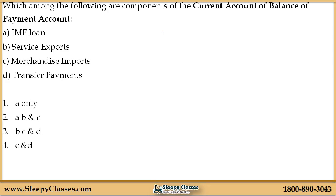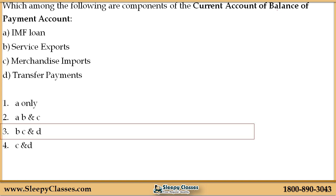Fourth question: Which among the following are components of the current account of the balance of payments? Two accounts are very important. The options are: A — loans, B — services exports, C — merchandise exports, and D — transfer payments. Let's look at the current account of balance of payment.